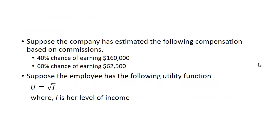Suppose the company has estimated the following compensation based on commissions: 40% chance of earning $160,000, 60% chance of earning $62,500. And suppose the employee has the following utility function: utility equals the square root of I, where I is the level of her income.